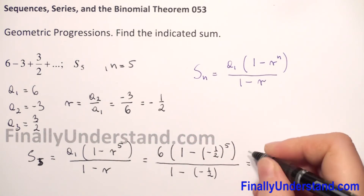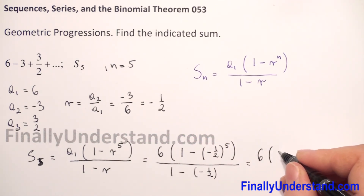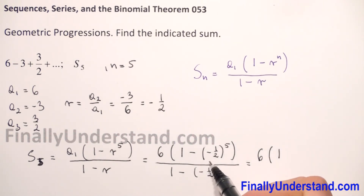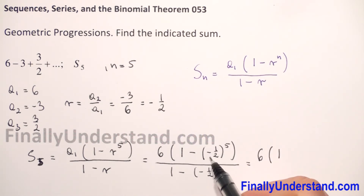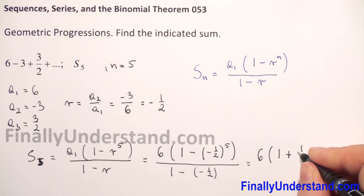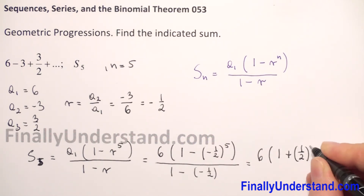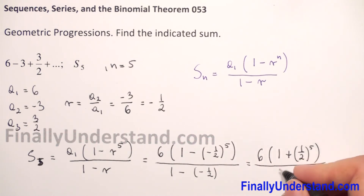This equals 6 times, and in parentheses we have 1 minus (negative 1 half) to the 5th power. Since we have a negative number raised to an odd power, the result is negative, so negative times negative gives positive, and we have 1 over 2 to the 5th power. The denominator: negative minus negative gives positive, so 1 plus 1 half equals 3 over 2.